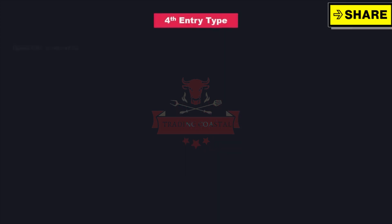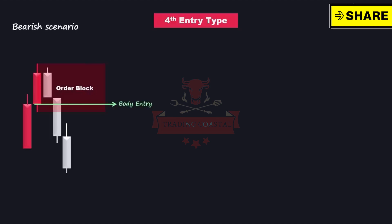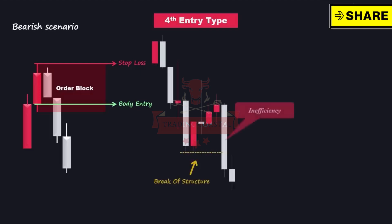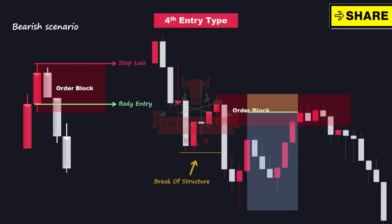The fourth entry type involves placing the entry based on the body of the candle once a valid order block is identified. In sell positions, the stop loss is set to touch the higher wick of the order block. This entry type is undoubtedly riskier because the stop loss is positioned within the order block zone. If the price intends to fully reverse the order block, it may trigger the stop loss. It's important to be aware of the increased risk and carefully consider its suitability within your trading strategy.